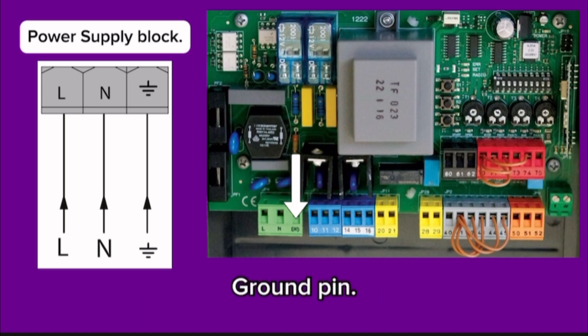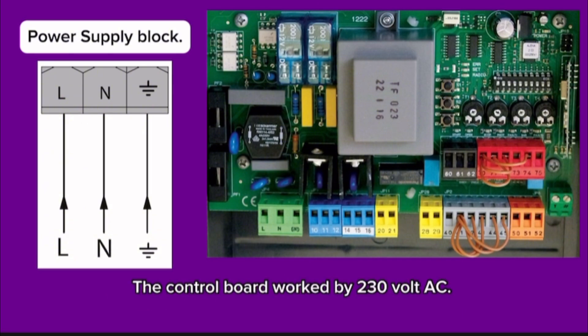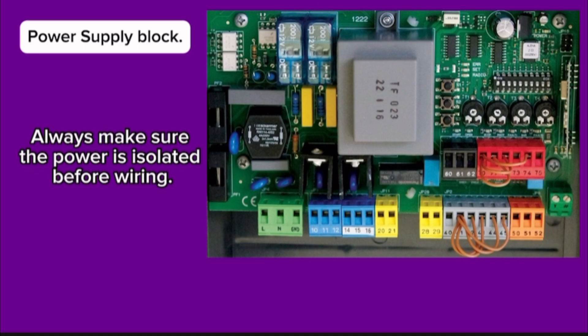Ground pin. Connect ground wire from main power supply. This single-phase power supply with earth cable. The control board works by 230 volt AC. Always make sure the power is isolated before wiring.